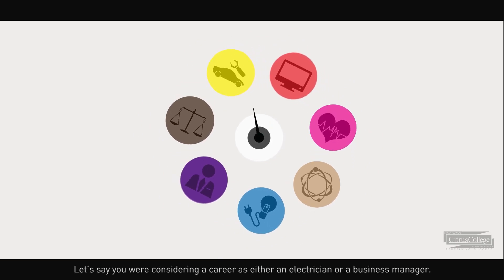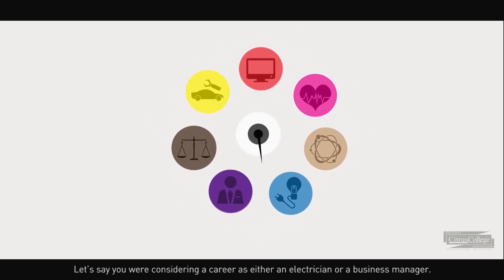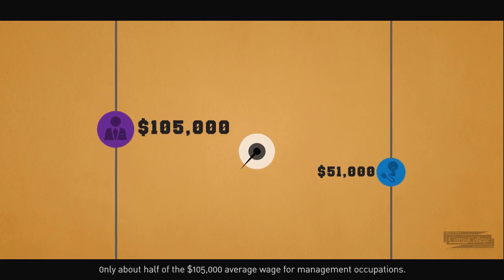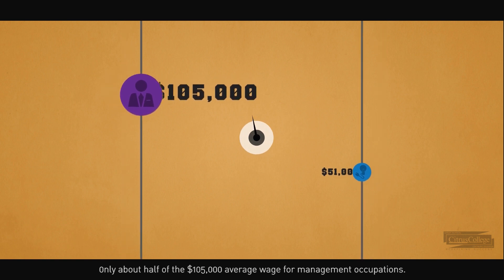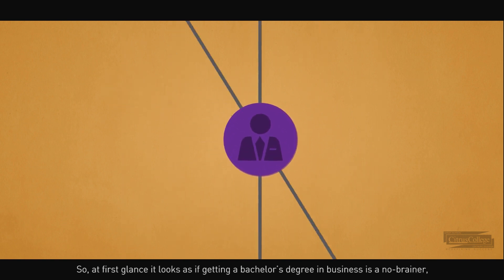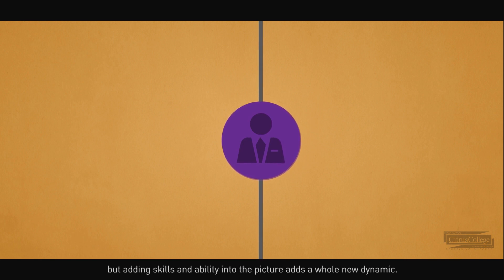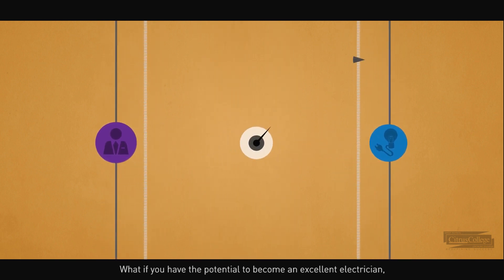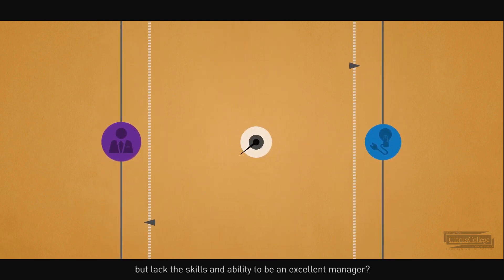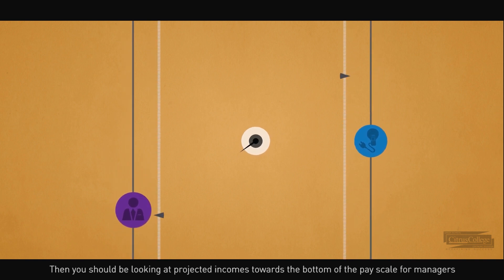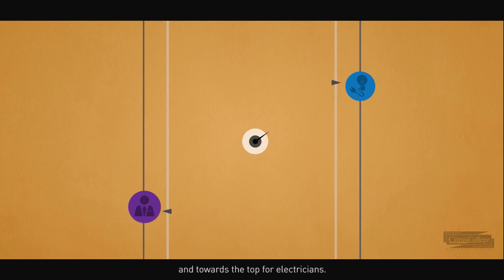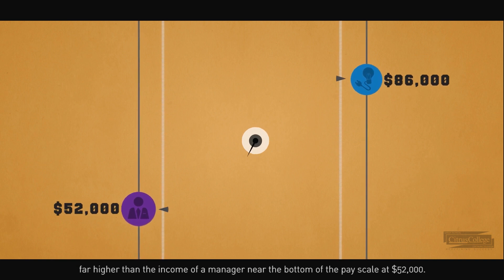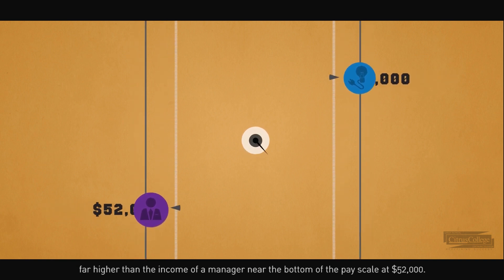Let's say you were considering a career as either an electrician or a business manager. You would find that the average annual income for electricians is $51,000, only about half of the $105,000 average wage for management occupations. So at first glance it looks as if getting a bachelor's degree in business is a no-brainer. But adding skills and ability into the picture adds a whole new dynamic. What if you have the potential to become an excellent electrician but lack the skills and ability to be an excellent manager? Then you should be looking at projected incomes towards the bottom of the pay scale for managers and towards the top for electricians. You would then discover that electricians near the top of the pay scale make around $86,000, far higher than the income of a manager near the bottom of the pay scale at $52,000.